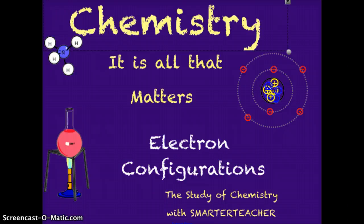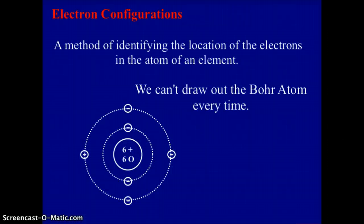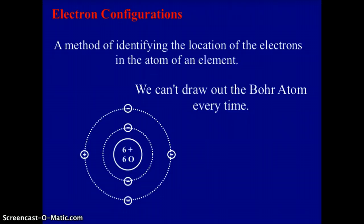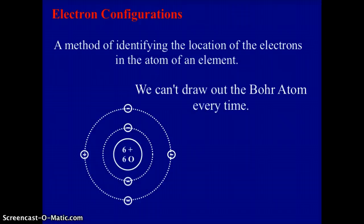Welcome again to Chemistry — It Is All That Matters. Today we're going to talk about electron configurations. Electron configurations are a method of identifying the location of electrons in an atom without having to draw out the Bohr atom. As we said, the Bohr atom model doesn't really work beyond the 18th or 20th element when you're getting into the D blocks and F blocks.